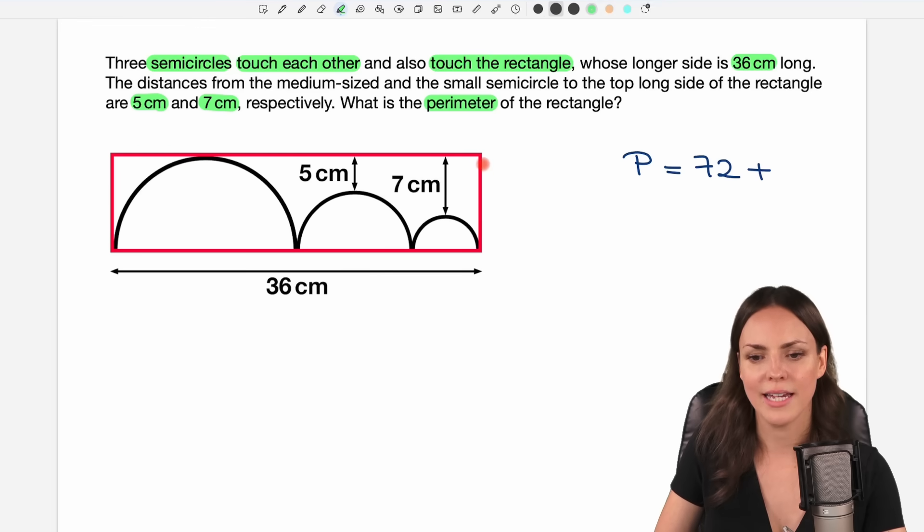But then we also have to add the length of these two sides here. We don't know yet how long they are so we just call the length x here and here. And if I add both lengths I have x plus x so I add 2x in here. So to find my perimeter I have to find the length of x.